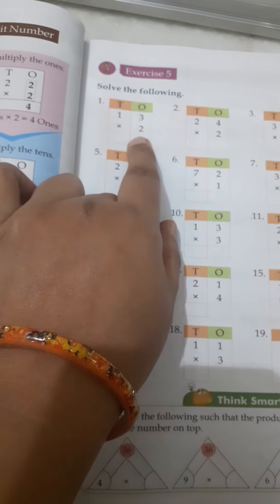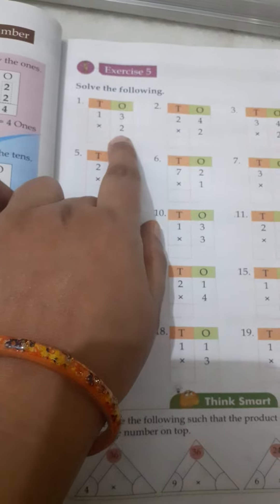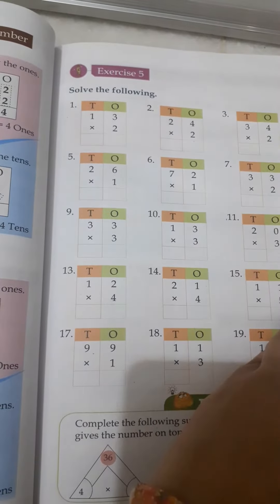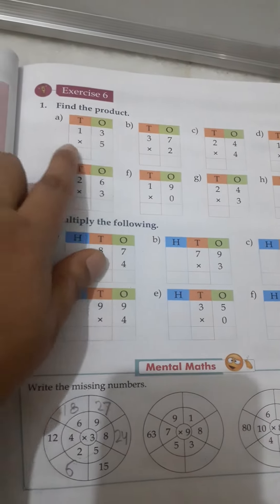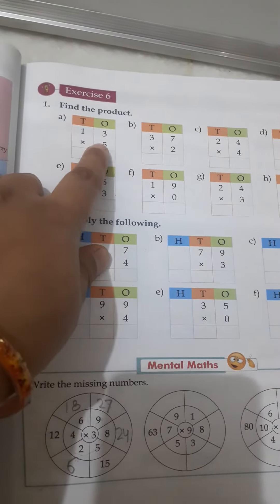And this is without regrouping. Without regrouping means without any carry. And this is the 5th exercise. And the 6th exercise is with regrouping. With regrouping means with carry.